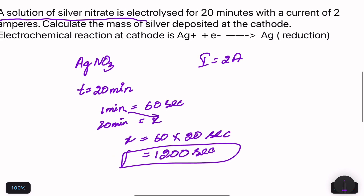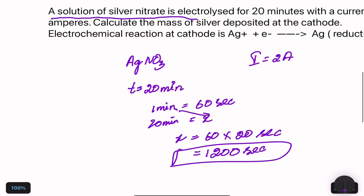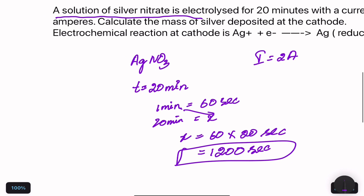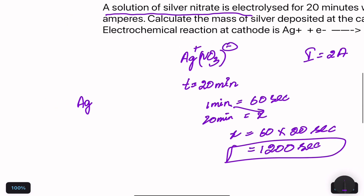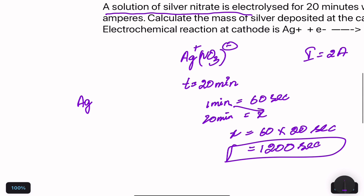The reaction taking place is: Ag⁺ + NO₃⁻ is the silver nitrate solution, and Ag⁺ gains one electron to form Ag. This reaction takes place at the cathode, so silver is deposited at the cathode.